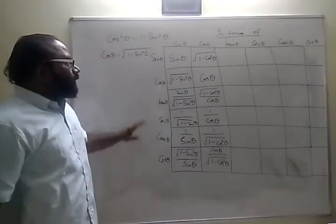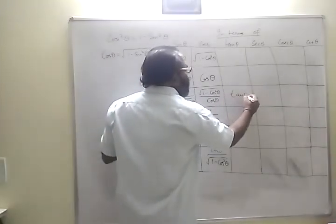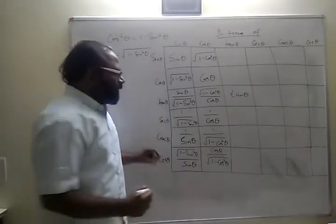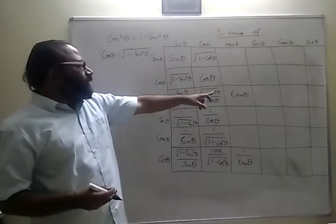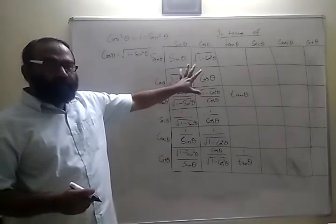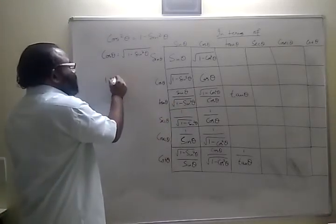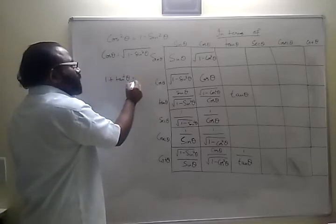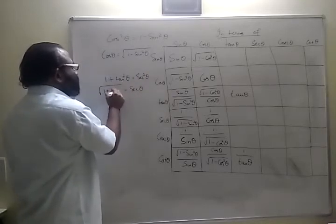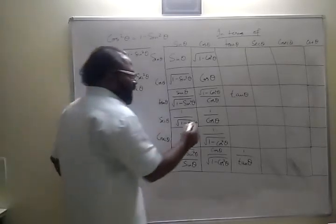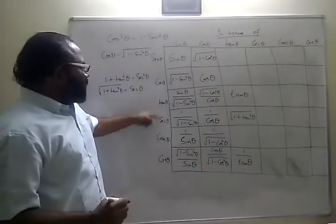Now, everything in terms of tan — let's write tan theta directly as tan theta. Cot theta is 1 by tan theta. We have the identity 1 plus tan squared theta equals secant squared theta, so secant theta equals root of 1 plus tan squared theta.